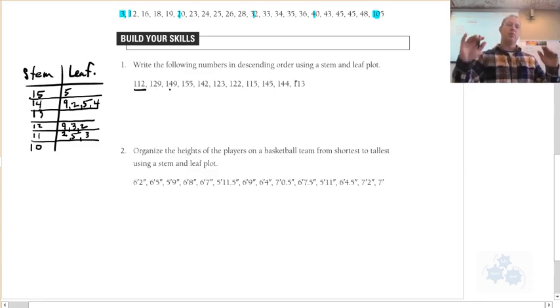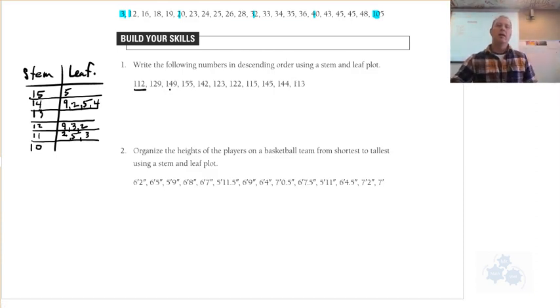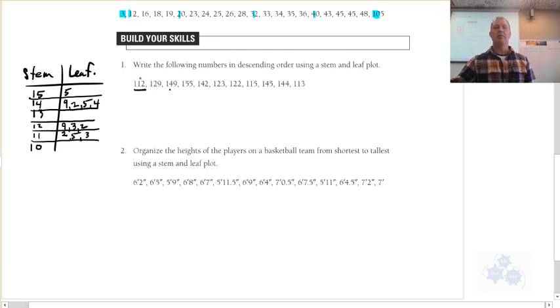You can quickly check to see if you missed anything, if you want, by counting the numbers. 1, 2, 3, 4, 5, 6, 7, 8, 9, 10, 11. And then count the numbers that you put on the right side here. 1, 2, 3, 4, 5, 6, 7, 8, 9, 10, 11. So if that matches, then it looks like you've probably gotten everything.